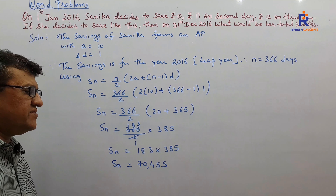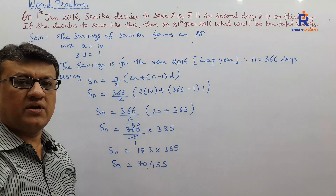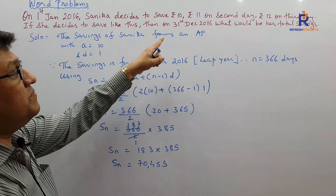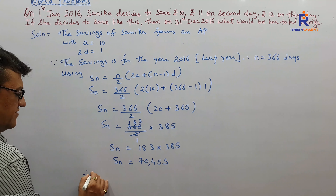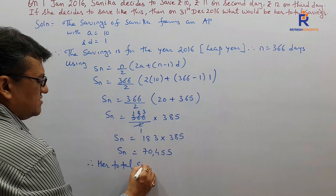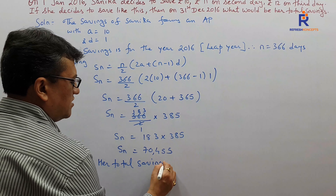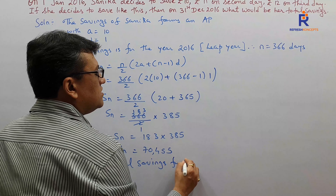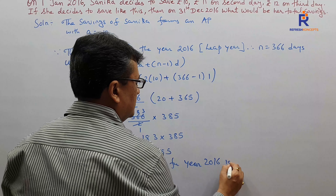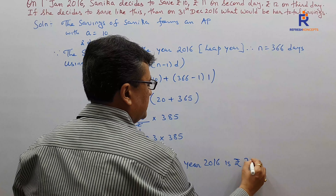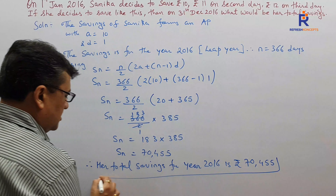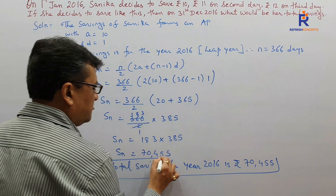When you multiply 183 with 385 your answer is 70,455. Therefore her total savings for the year 2016 is Rs. 70,455. Quite simple! The key thing to be careful about was recognizing 2016 as a leap year, giving N = 366 instead of 365.